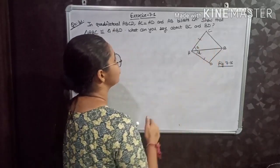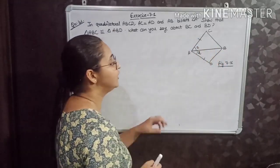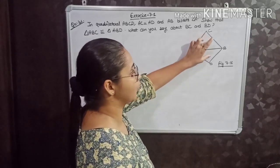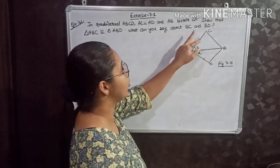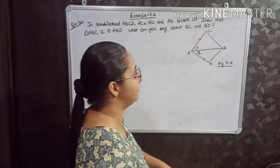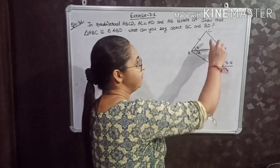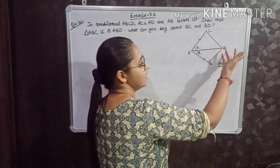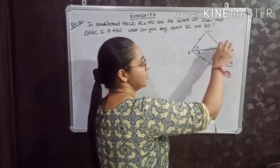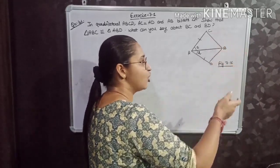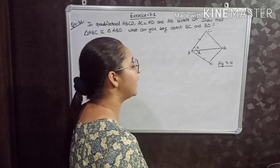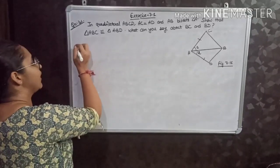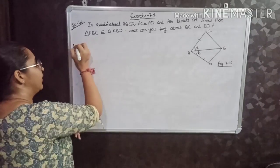You have to show these two triangles are congruent. And also, what can you say about BC and BD? Is there any relation between these two sides? That you also have to show.